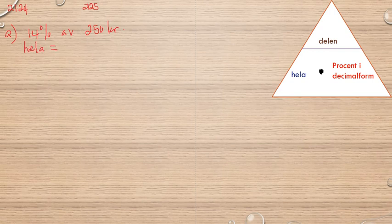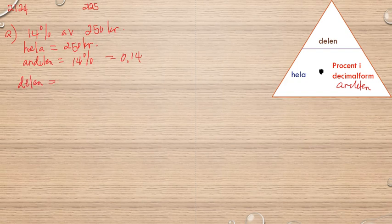So delen (the part) is equal to... I multiply hela (the whole) with andelen (the proportion) in decimal form. So that's 250 times 0.14. 250 times 0.14 gives me 35 kronor.